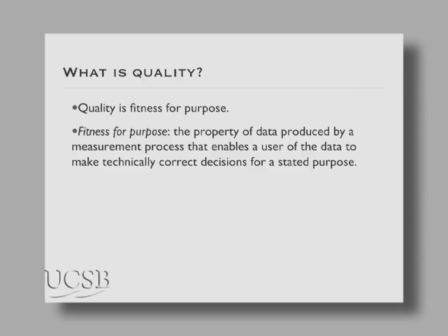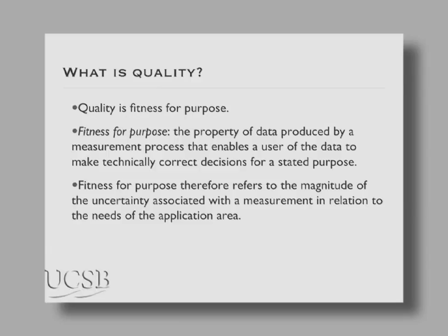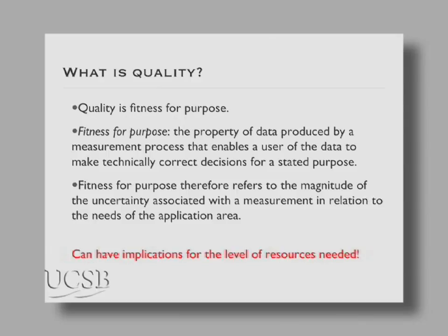Fitness for purpose is the property of the data that enables you to make the technically correct decision for a stated purpose. If I want the carbonate ion concentration within 1%, I would suggest relaxing that criteria. But if you only want it within 15%, it's probably pointless to pay an extra $200,000 to get it within 1% if 15% was going to be adequate. Think about how well you need to know the results. This fitness refers to the magnitude of the uncertainty associated with the measurement in relationship to your needs.